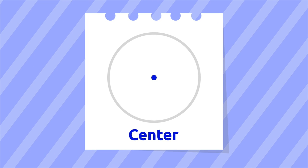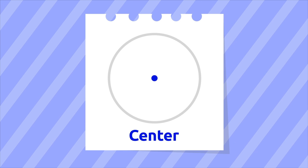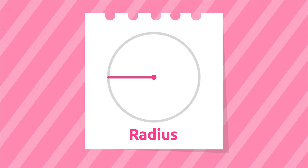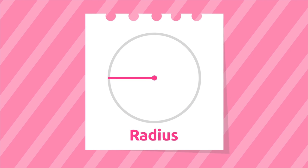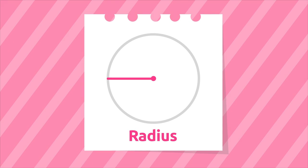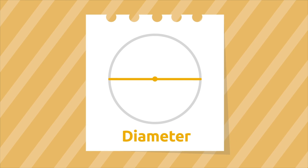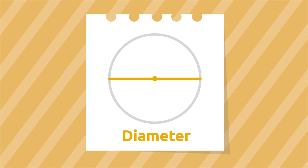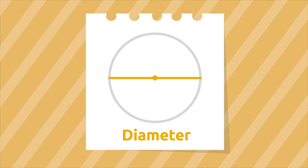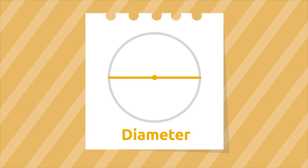The center is the point from which all the points of the circumference are the same distance. The radius is a segment which connects the center with any point of the circumference. The diameter is a segment which connects two points of the circumference passing through the center — it divides the circle into two parts.